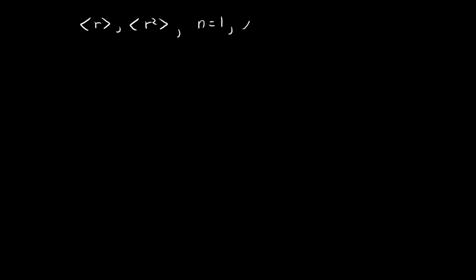In the first part of this problem, we're going to look for the expected value of r and the expected value of r squared. We're dealing with the ground state, which corresponds to n=1, l=0, and m=0. In order to find these two values, I'm going to start with the general case and look for the expected value of r to the power of n. Once we find this expression in terms of n, we can substitute n=1 and n=2 to find these two values.